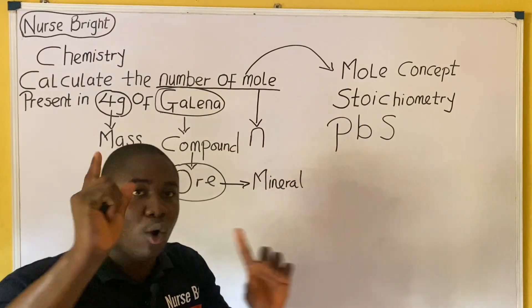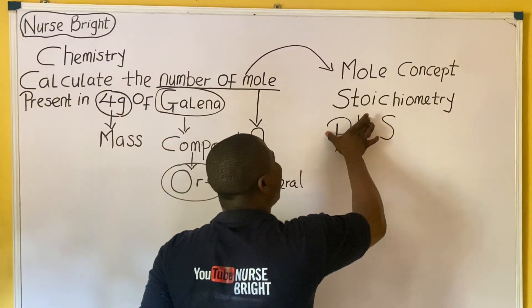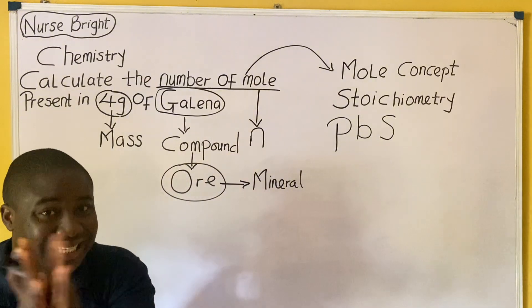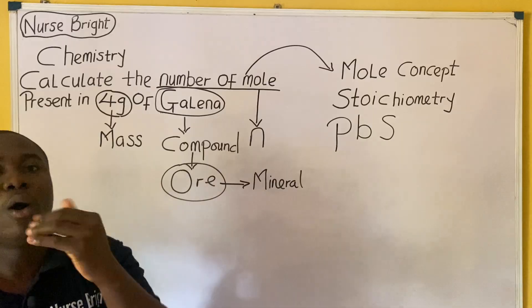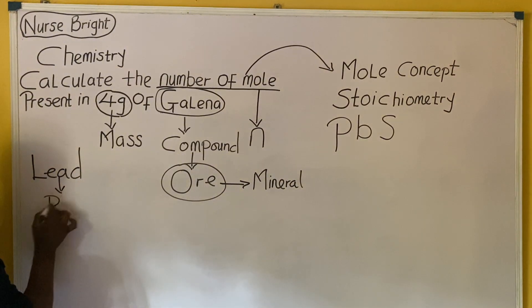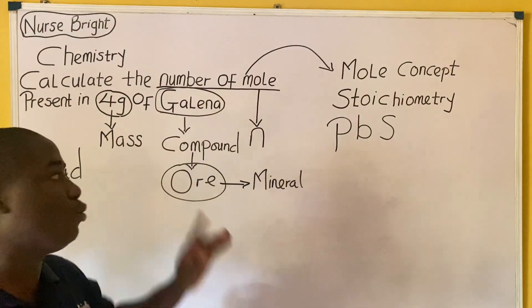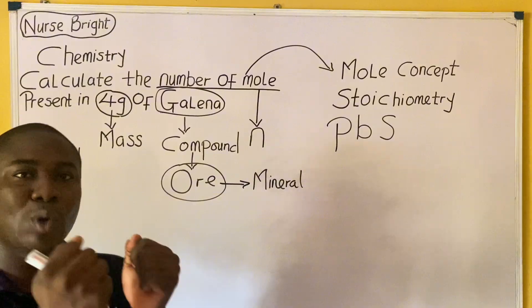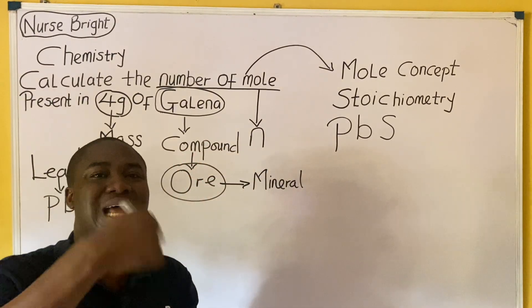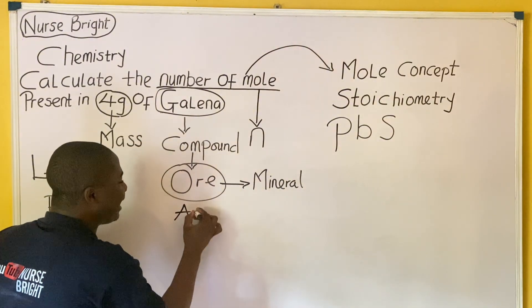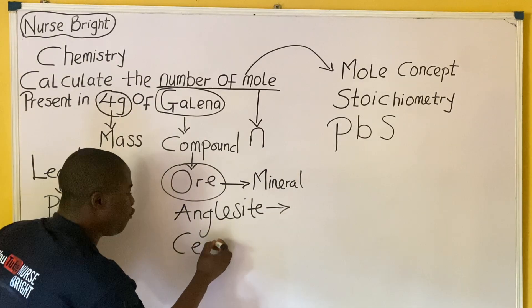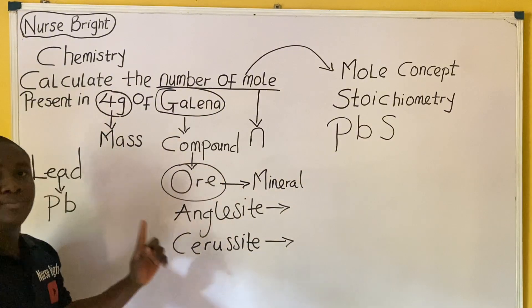If they ask you what is the ore for lead as an element — lead is symbolized as Pb — you simply tell them galena. Galena is one of the major minerals from which lead can be extracted. There are other ores for lead as well. One is anglesite, and another is cerussite — both are ores for lead.